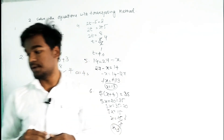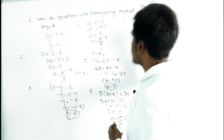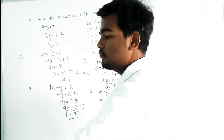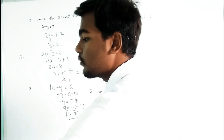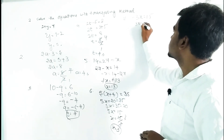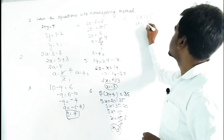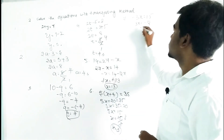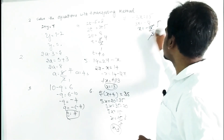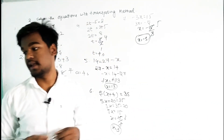Our seventh question is minus 3x equals 15. Transpose the minus to the right side: 3x equals minus 15. Divide both sides by 3: x equals minus 15 divided by 3, so x equals minus 5. That is the answer.